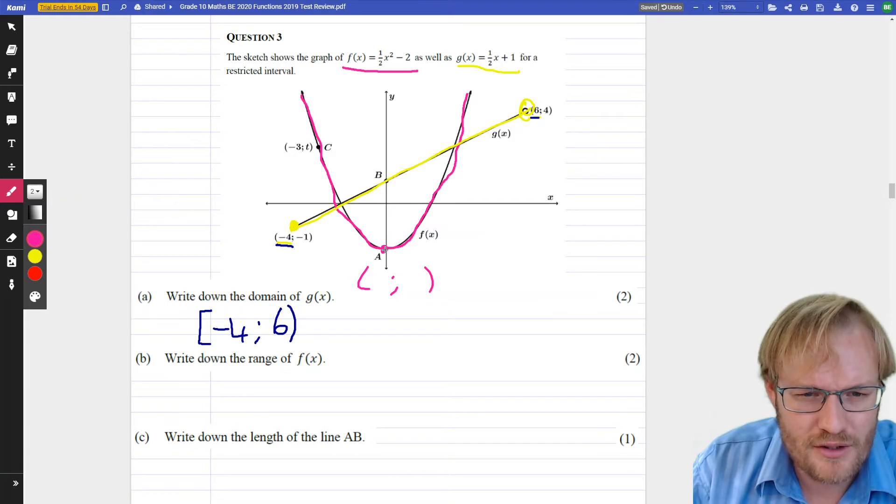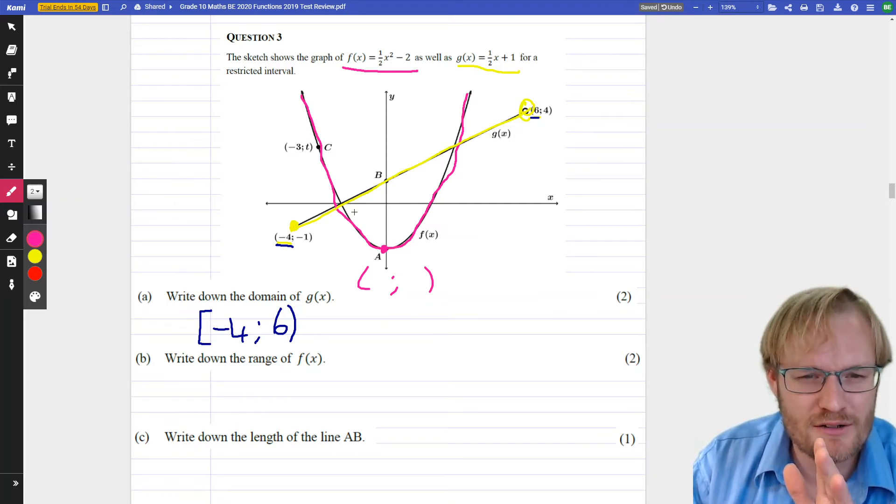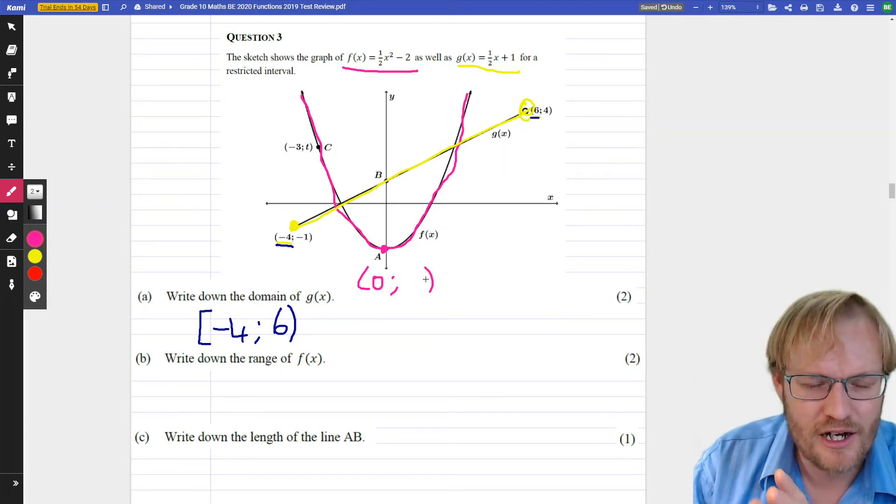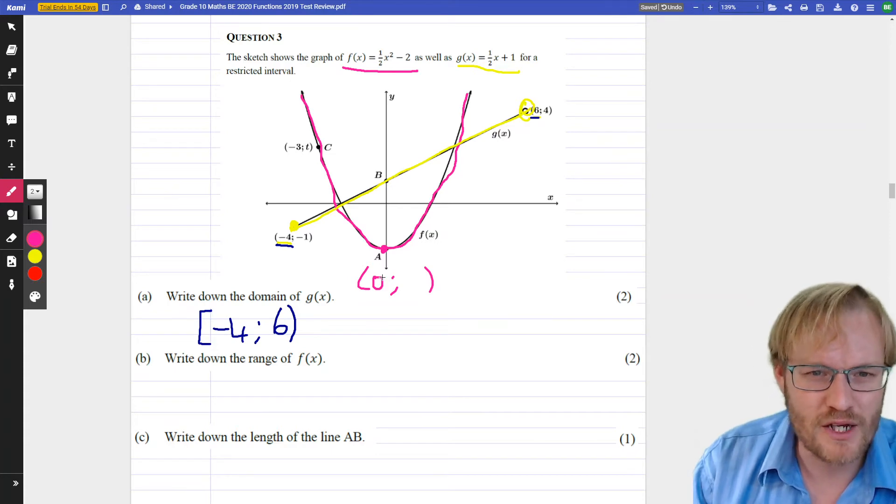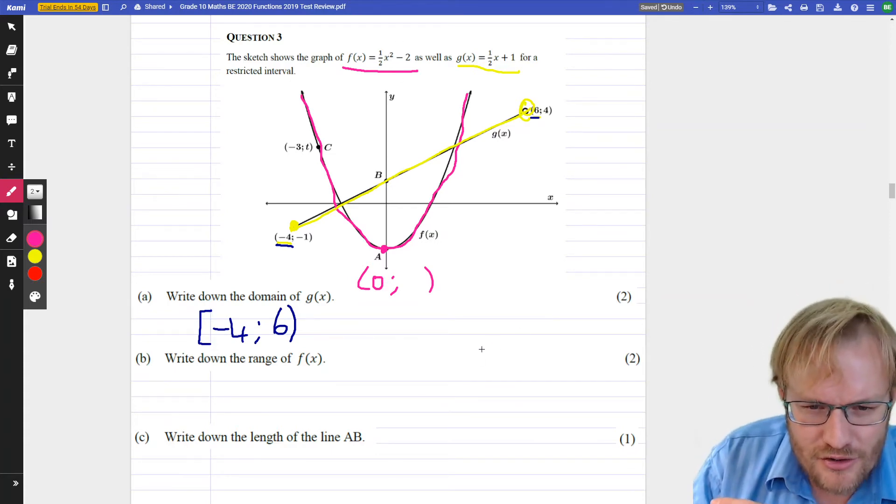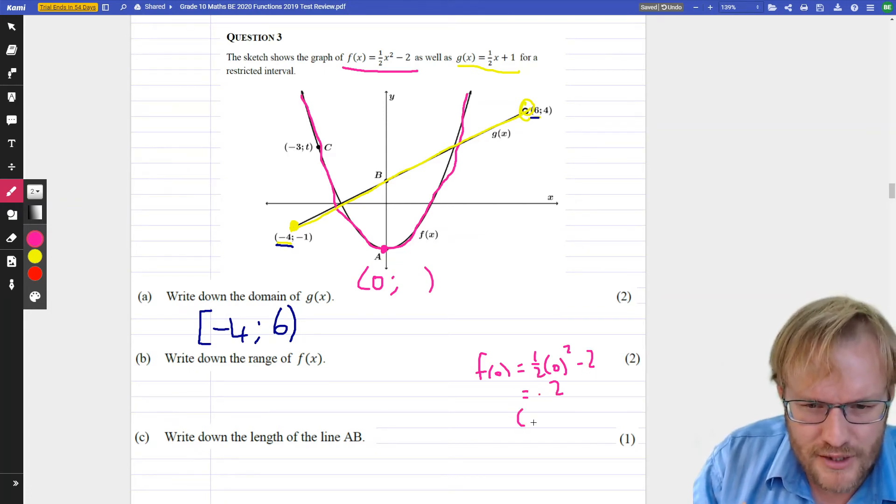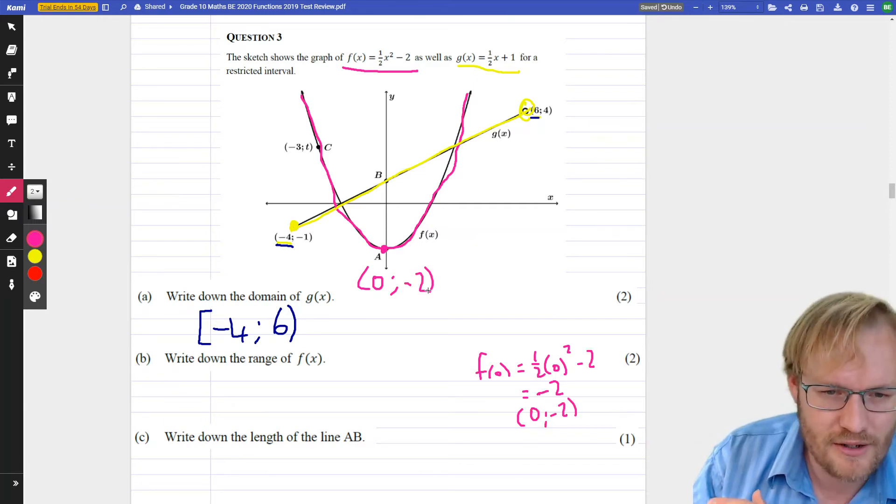So we don't know what this A is. It would be nice if we knew what its coordinates were. Well, let's actually think. What do we know about this? It's the y-intercept. And we know the x value is 0. How do we find the y value if we're given the x value? Well, we substitute 0 in. So I'm actually going to do it here on the side. So we're asking f(0) = (1/2)(0)² - 2. Well, that's just 0. So it's -2.